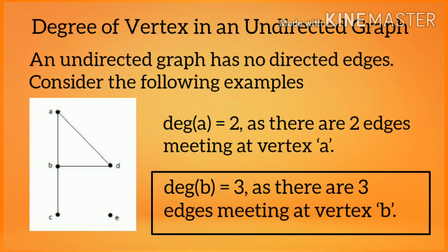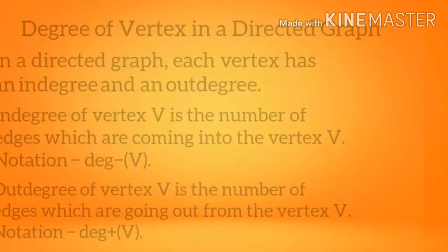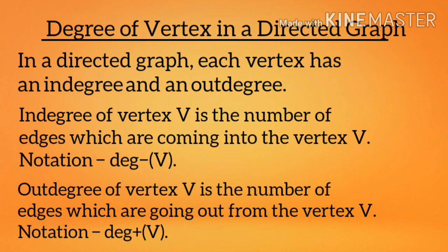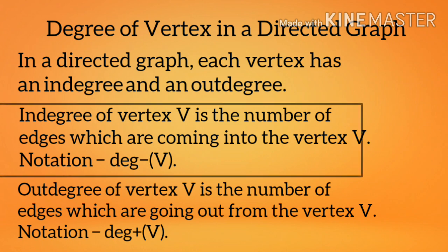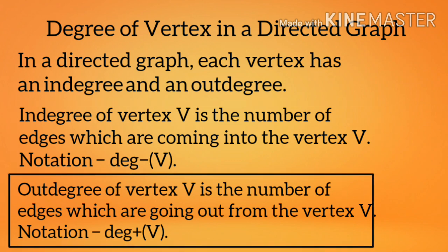Degree of vertex in a directed graph: in a directed graph, each vertex has an in-degree and an out-degree. The in-degree of a vertex V is the number of edges coming into vertex V. The out-degree of a vertex V is the number of edges going out from vertex V.